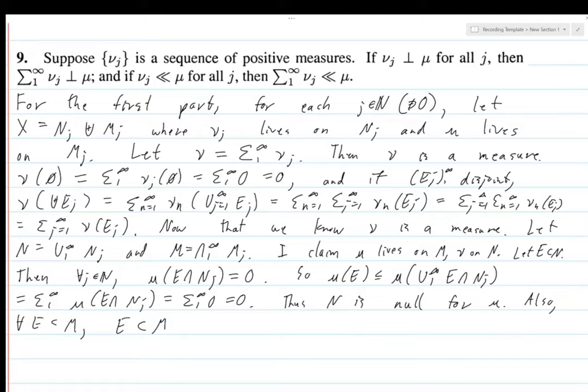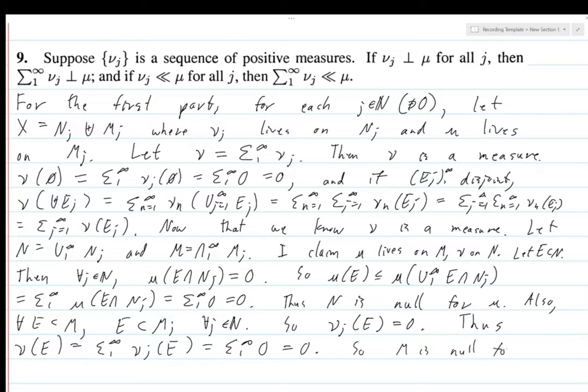Now we're looking at M and we want to prove that nu is null here so given any subset E of M, E is a subset of M_j for all j in N. So nu_j of E is equal to 0 and that's just because of how we define this. Thus nu of E is equal to the sum from 1 to infinity of nu_n E by definition of nu, but each of these nu_n's are 0 or nu_j's or whatever you want to call them so this equals 0.